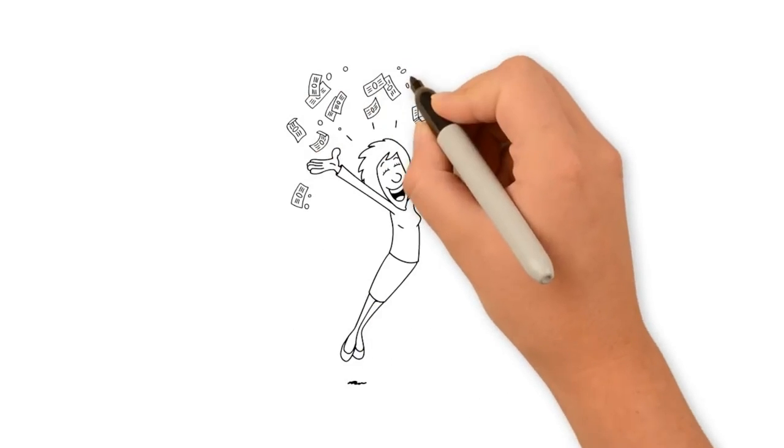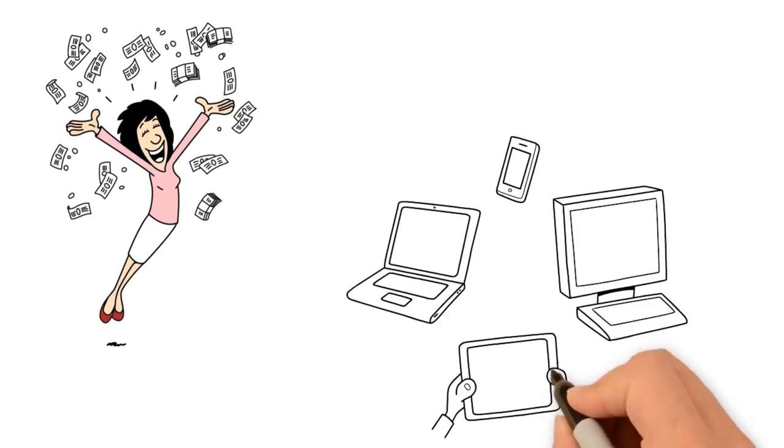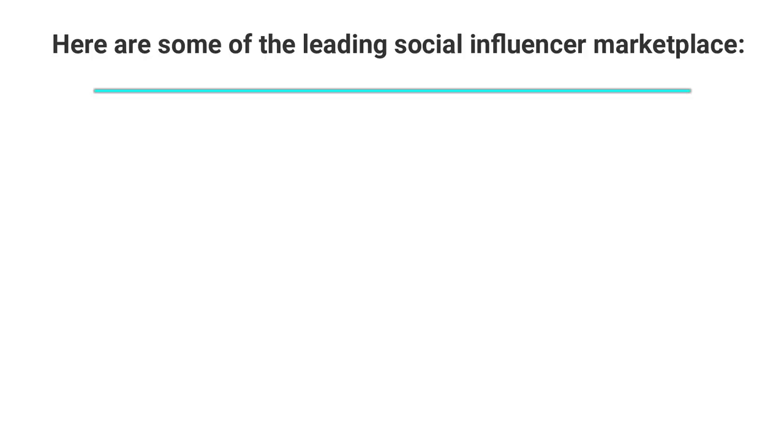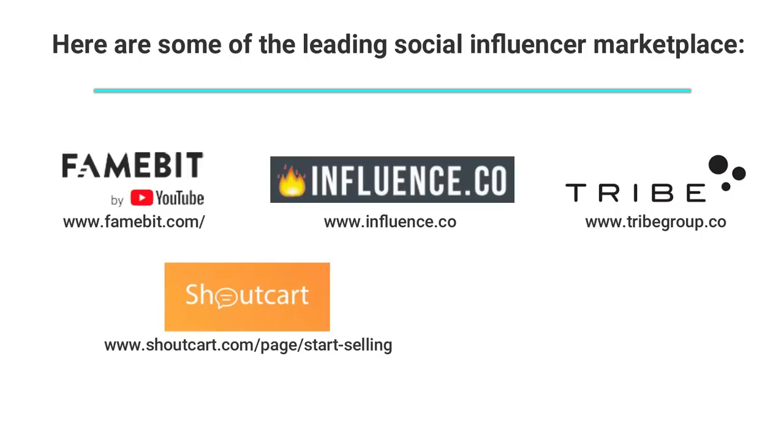Number 5: Joining Social Influencers. This is a trending new way to make money by showcasing your Instagram or YouTube profile to prospect advertisers. Here are some of the leading social influencers marketplaces: Influence.co, FameBit.com, TribeGroup.co, ShoutCard.com/page/start-selling, PlugHype.com.